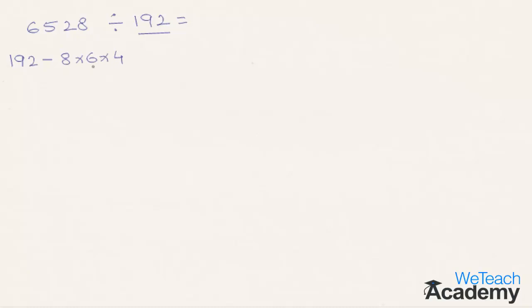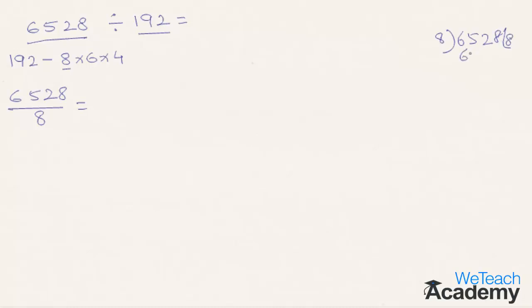The next step is to divide 6528 by its first factor, that is 8. So 6528 divided by 8 — let us once again do this in a rough column. 8 eights is 64; 65 minus 64 is 1. Take the 2, the next number, downwards. 8 once is 8, so 12 minus 8 is 4. Bringing down the third digit gives 48. 8 six times is 48 and the remainder is 0. The quotient which remains as the result is written here.